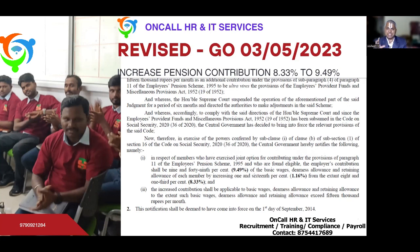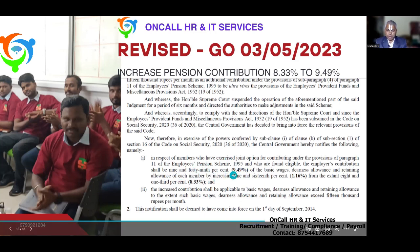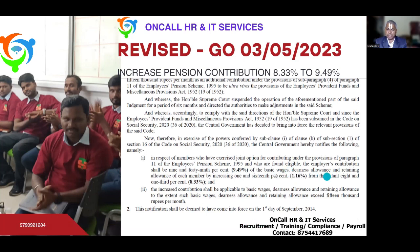Now, coming to the HR perspective — how to bifurcate it while preparing the ECR, you have to keep very close concentration. For those people who have opted for higher pension, you have to make the calculation differently. For others, the usual 8.33% applies. The circular clearly says 9.49% of the basic wage, DA, and retaining allowance of each member, by increasing 1.16 percentage points from the existing 8.33%.